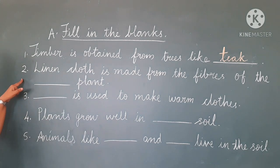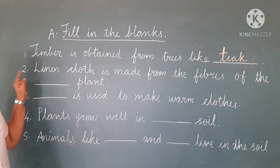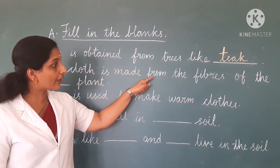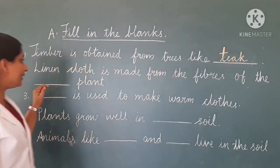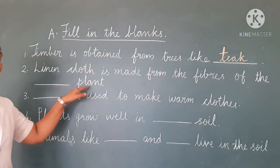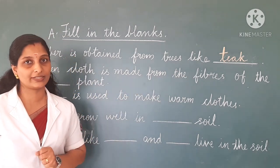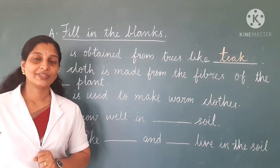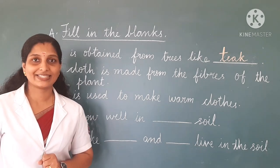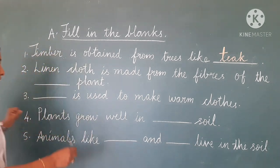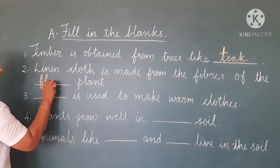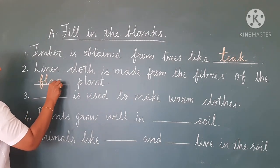Then the second question: linen cloth is made from the fiber of the blank plant. From which plant do we get linen? Yes — flax plant. So you can write flax. F-L-A-X. Flax.